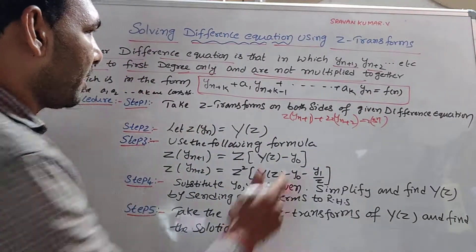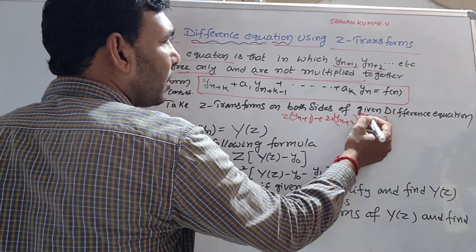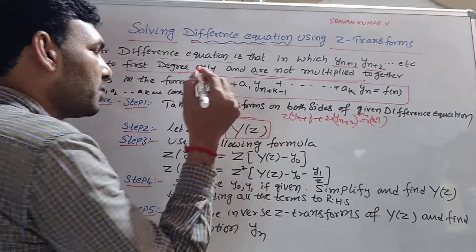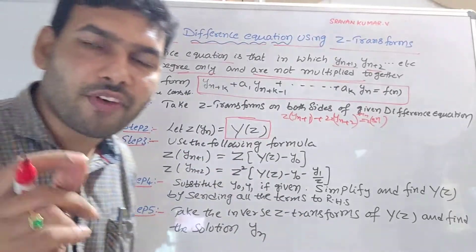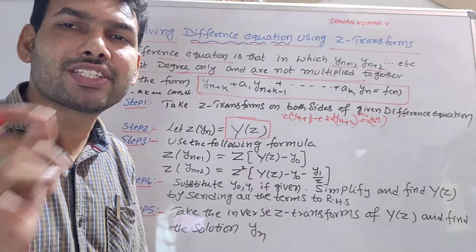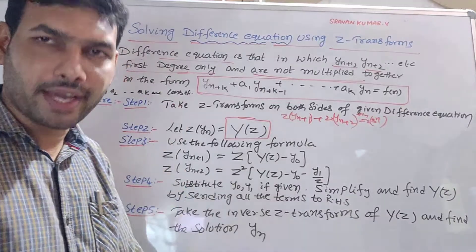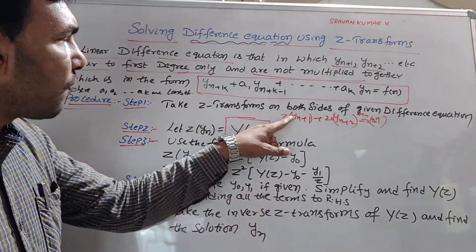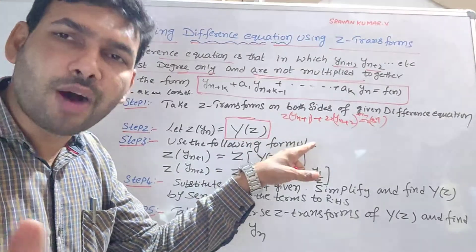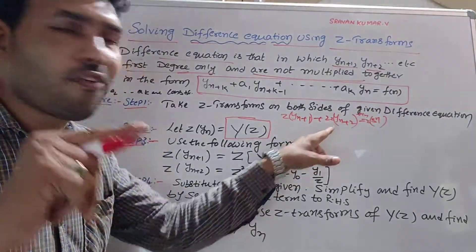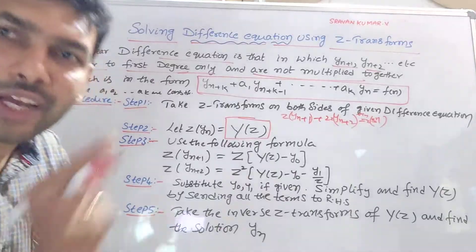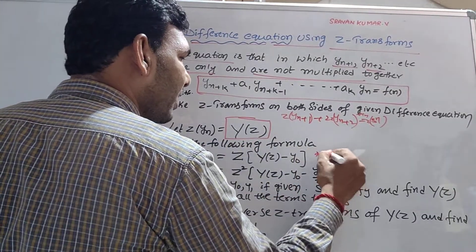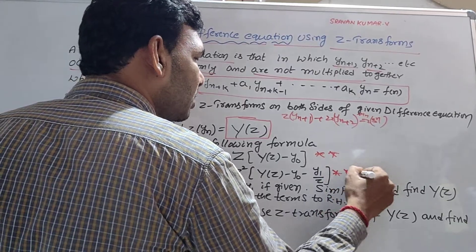Next, Z of yn. For example, Z of yn is capital Y of Z. So, Z transform of yn is written as capital Y(Z). Use these formulas: Z of yn+1 and Z of yn+2. These two formulas are very important. We have to start with the problem using these formulas.